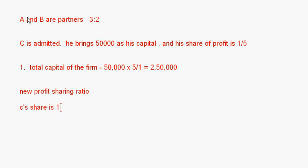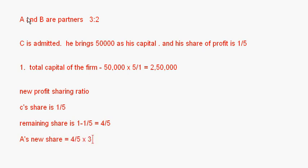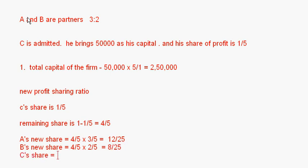C's share is 1/5, so the remaining share is 1 minus 1/5, which equals 4/5. A's new share equals 4/5 multiplied by 3/5, which is 12/25. B's new share is 4/5 multiplied by 2/5, which is 8/25. C's share with denominator 25 is 5/25. So the new ratio is 12 : 8 : 5.